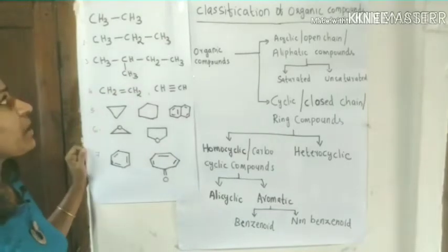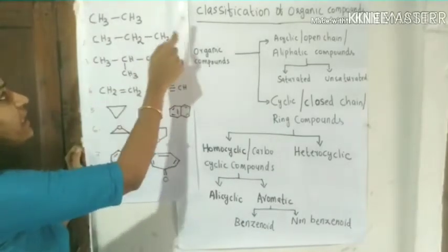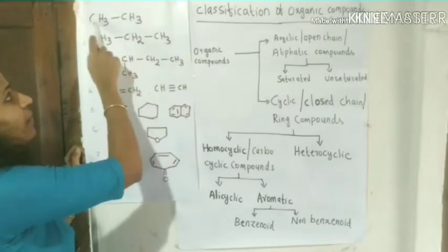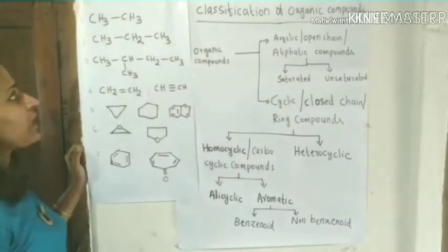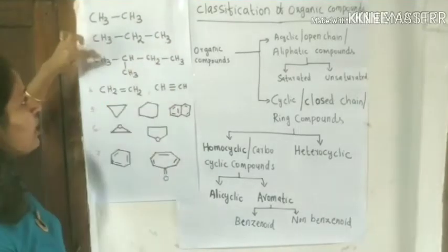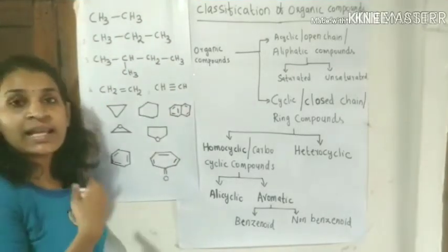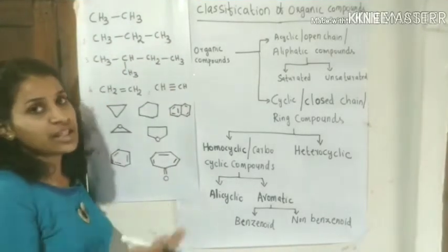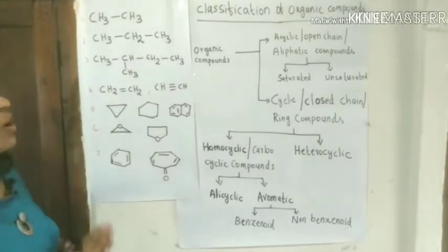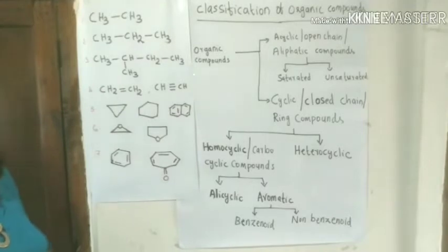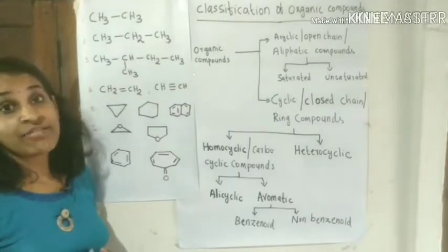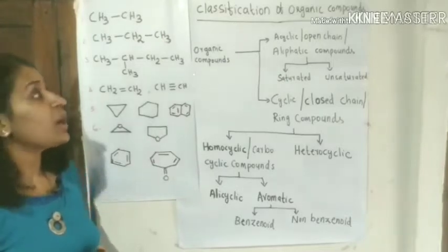Now let's see how carbon atoms are linked together. Carbon atoms are linked together to form long chain compounds. In these compounds, carbon atoms are linked with each other. These are acyclic, or open chain, or aliphatic compounds linked together.